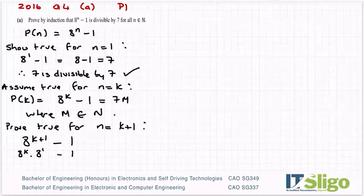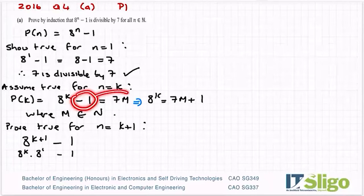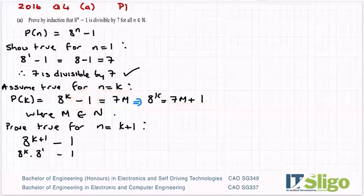I'm going to come back up here for a minute because I'm going to write it as 8^k is then equal to 7m plus 1. All I did was bring that minus 1 over the other side and write him as 7m plus 1. And the reason I did that is I want to be able to sub in for 8 to the power of k. So I'm going to take the 7m plus 1 and I'm going to sub him in here.